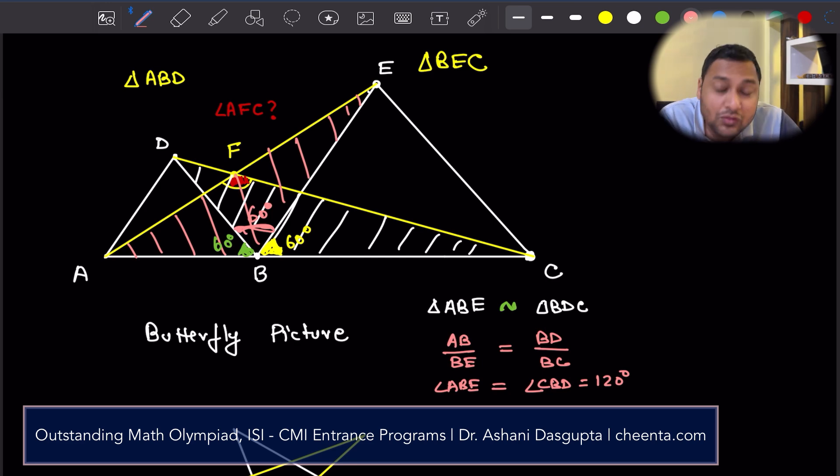So now what we can immediately say is this little angle, this angle in red, is equal to this angle in red. And this angle in green is equal to this angle in green.